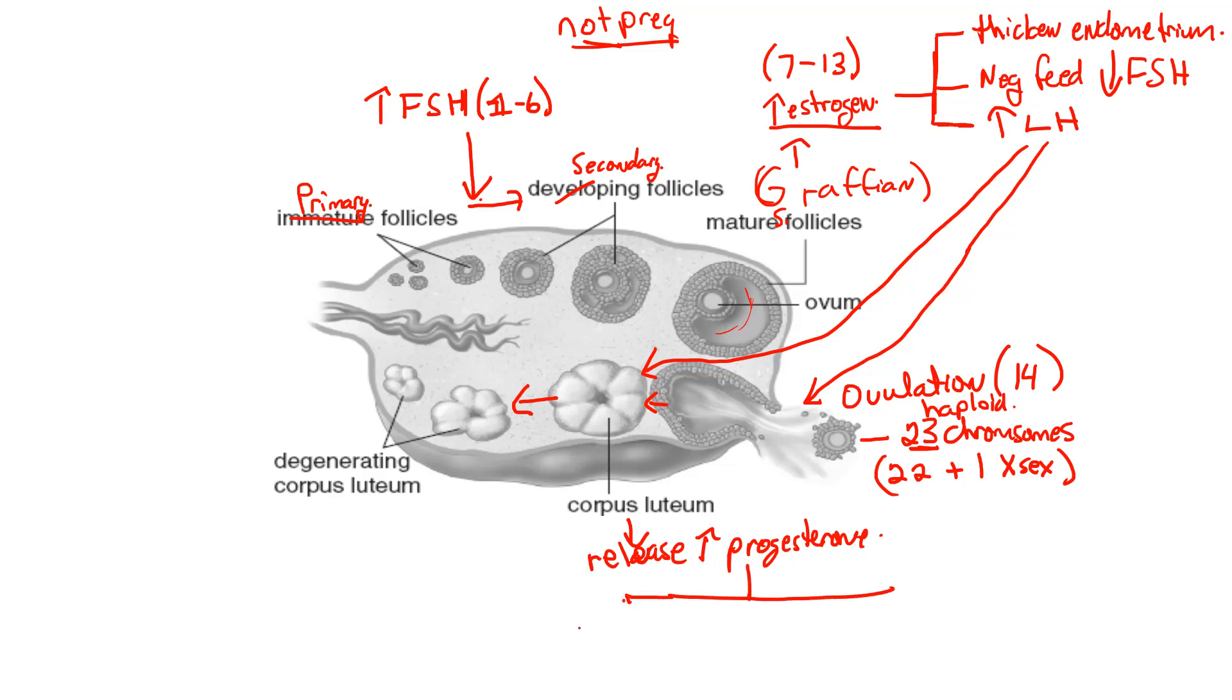High progesterone does a couple of things. One thing it does, it maintains the endometrium. Now, this is if you are pregnant, it's going to do this. We'll talk about that in another video. The other thing it does, it has a negative feedback effect on FSH, just like high levels of estrogen did. And again, we don't want another primary follicle developing. And the other thing it does, it has a negative feedback on LH. LH has already accomplished its job. And its job, of course, was to promote ovulation and the other one is to promote the formation of the corpus luteum. So once that job is fulfilled, high progesterone has a negative feedback on LH. We don't need those two hormones anymore.